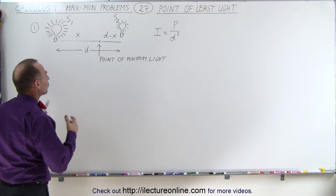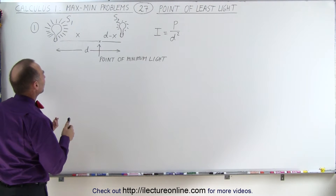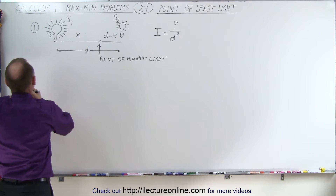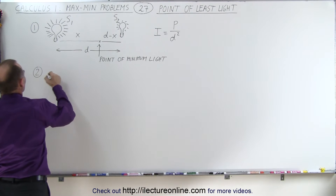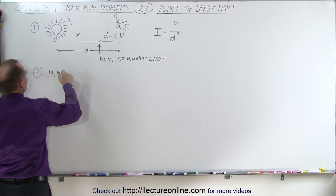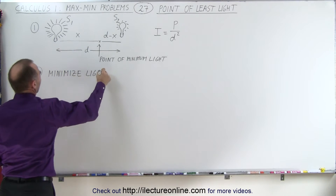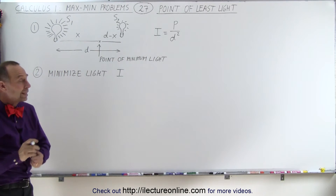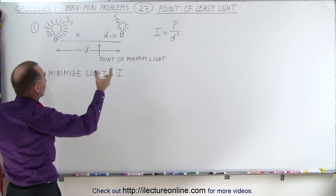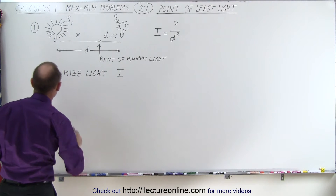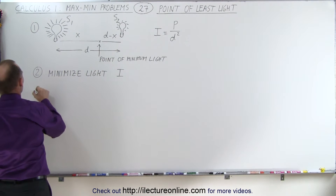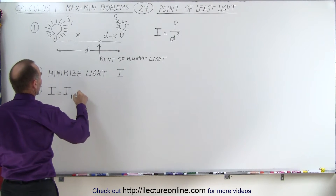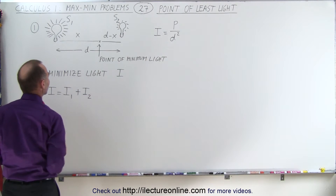Step two is determining what's being maximized or minimized. In this case, we're trying to minimize the amount of light received between the two sources — minimize light. We'll indicate that with the letter I for the intensity of the light. The light received from both sources is going to be the sum of the two, so I equals the intensity received from the first source plus the intensity received from the second source.